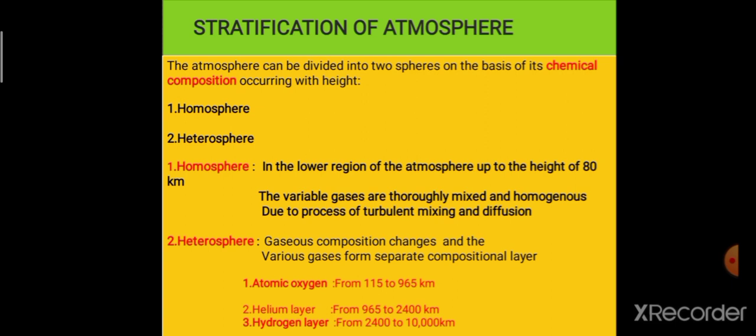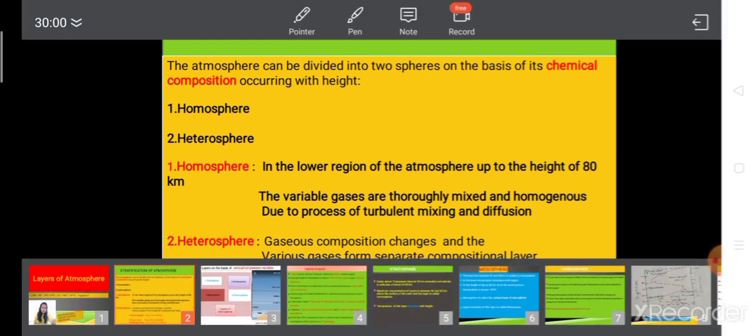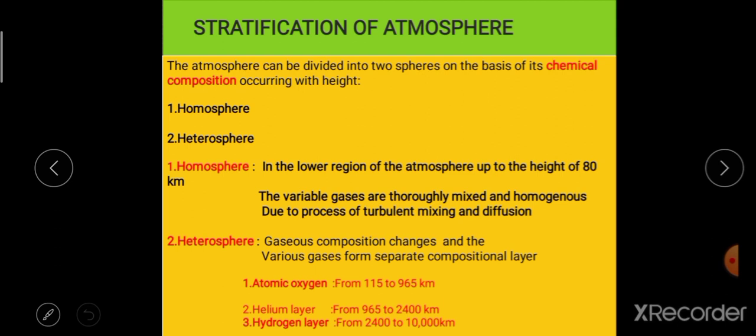The next one is the heterosphere. In the heterosphere, the gaseous composition changes — at different heights there are different gases. For example, atomic oxygen is present at a height of 115 to 965 kilometers, helium from 965 to 2400 kilometers, and hydrogen from 2400 to 10,000 kilometers.